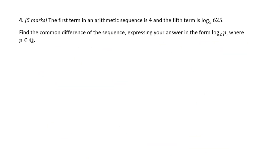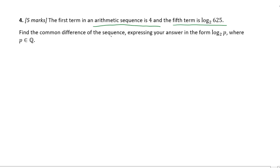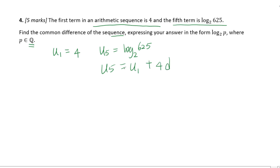Let's go to number 4. The first term in an arithmetic sequence is 4 and the fifth term is log base 2 of 625. Find the common difference expressing your answer in the form log base 2 of p, where p is a rational number. We know U1 equals 4 and U5 equals log base 2 of 625. For U5, we can write U1 plus 4d, so log base 2 of 625 equals 4 plus 4d.